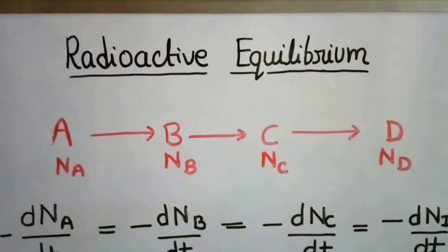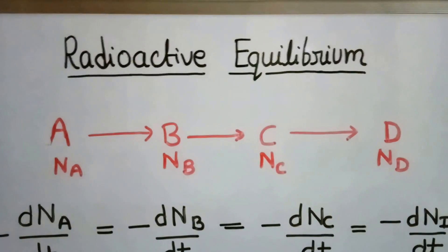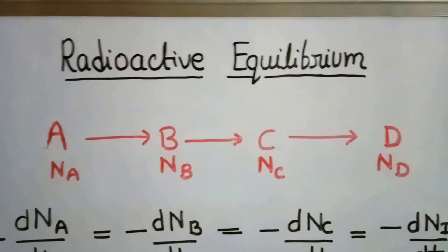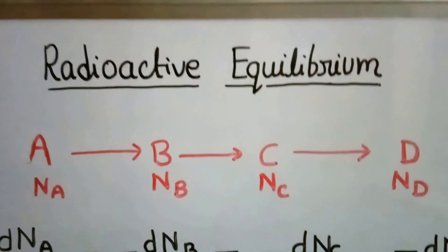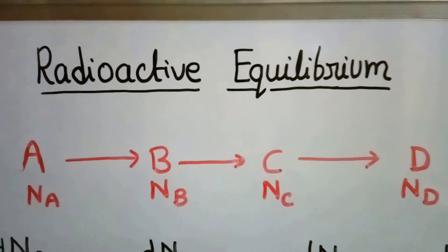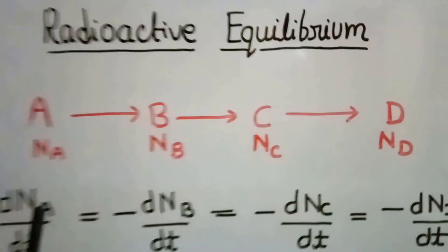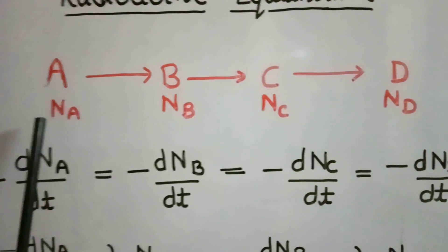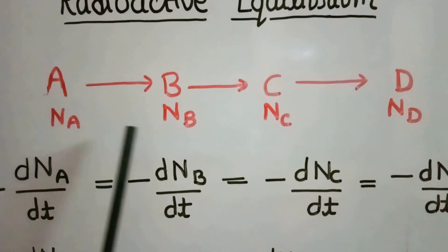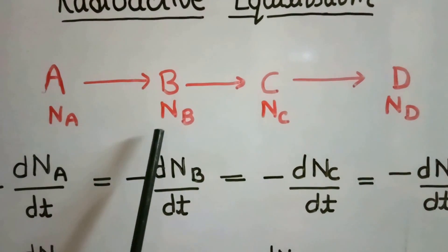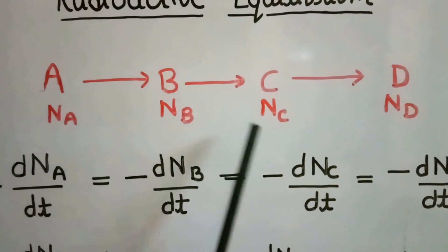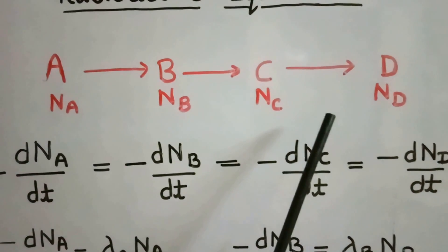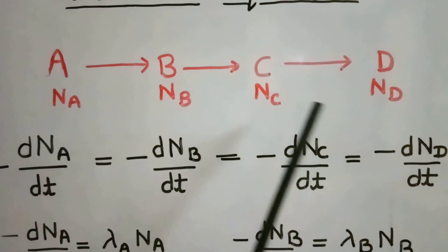Hello friends, today we will study about radioactive equilibrium. Let me consider this disintegration series. In this series, a compound radioactive element A is decaying to B, and B is decaying to C, and C is decaying to D and so on.